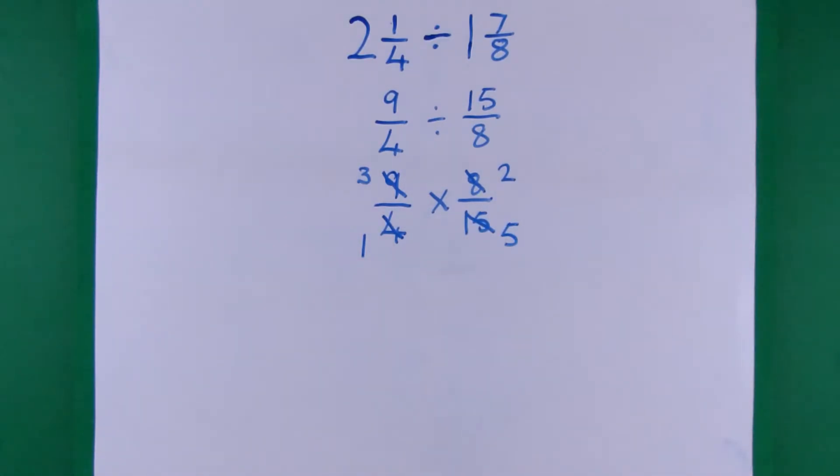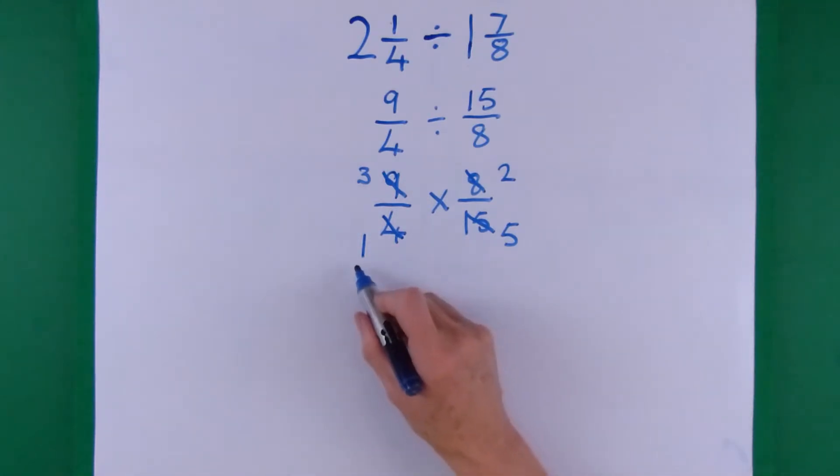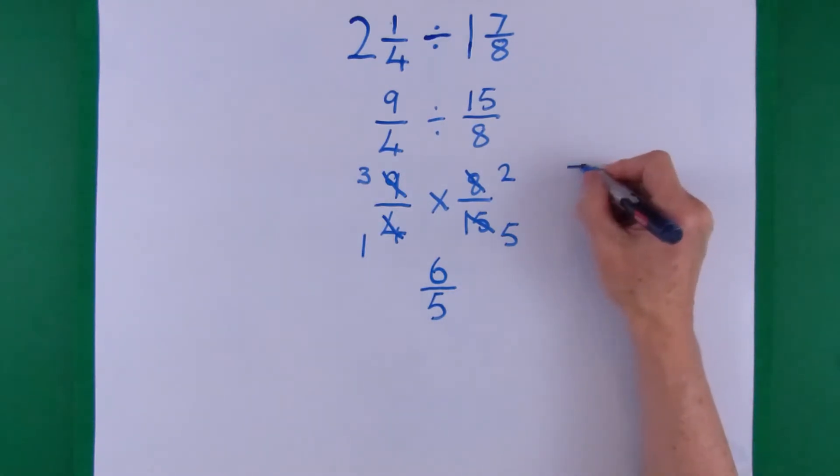So now we're ready to multiply along the bottom and along the top. Press pause and do the multiplying. Along the bottom we've got 1 times 5 is 5 so we're in fifths. And along the top we've got 3 times 2 and that gives you 6 fifths. So we're down to the divide.